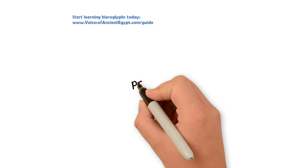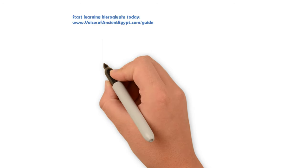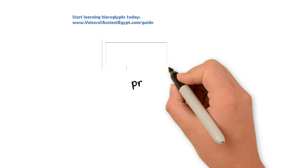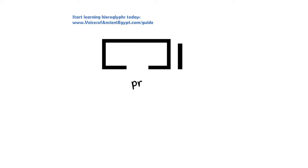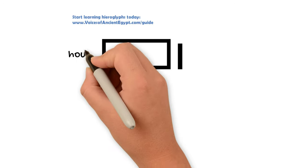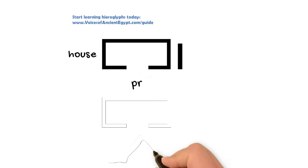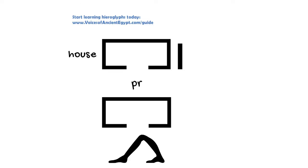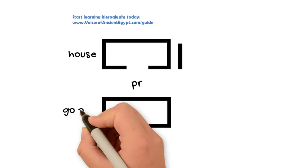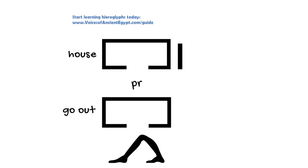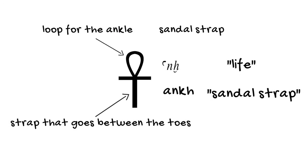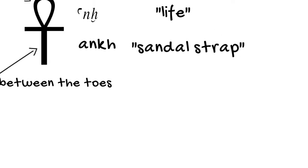So it may derive from that, just like the sign we pronounce 'per' is a picture of a house, and it can be the word for house, but you can also use the sounds from 'per' to write other words. So it could be this with sandal strap, and then by extension, since it has the same consonants as life, it is used to write that as well.